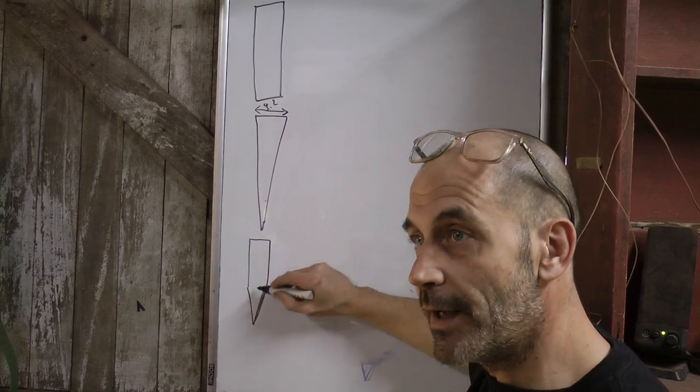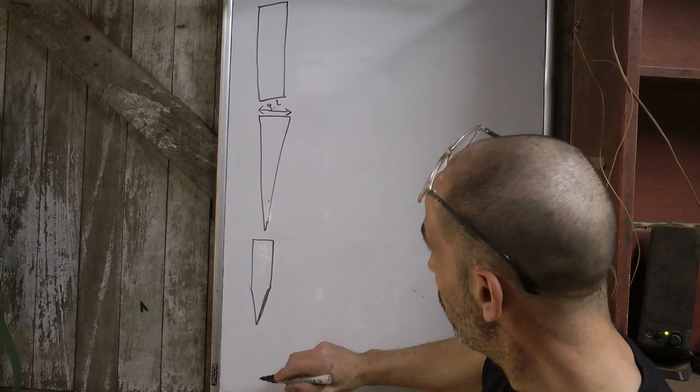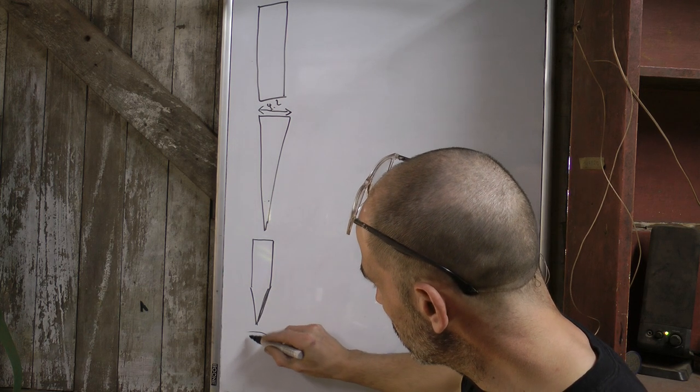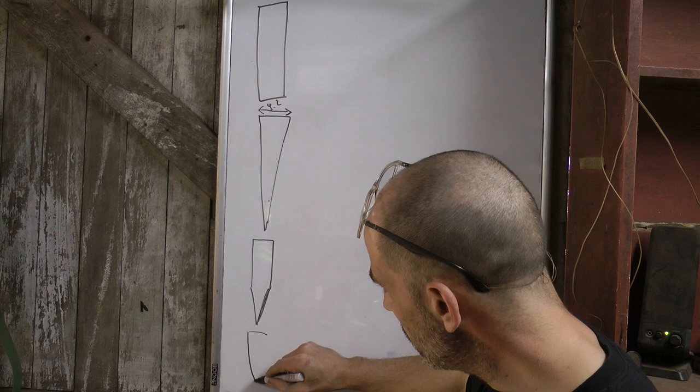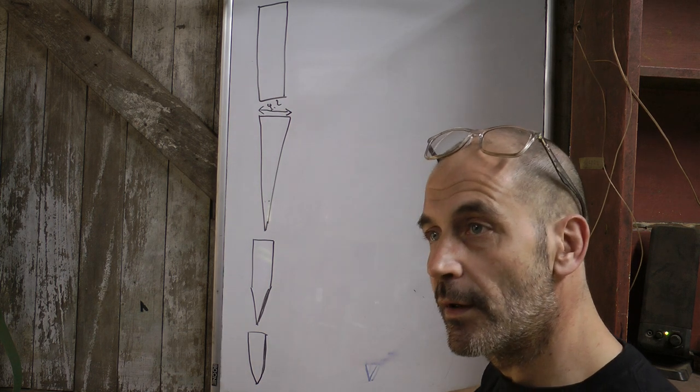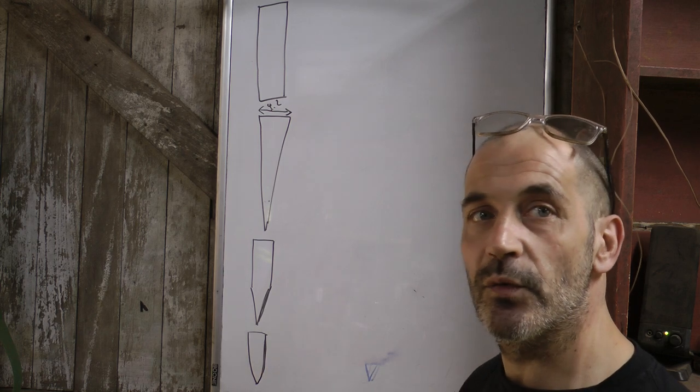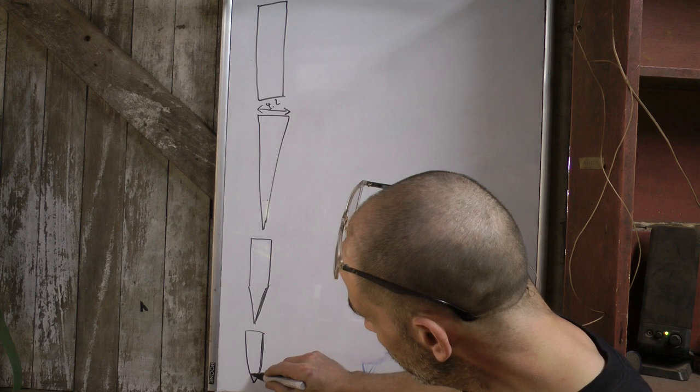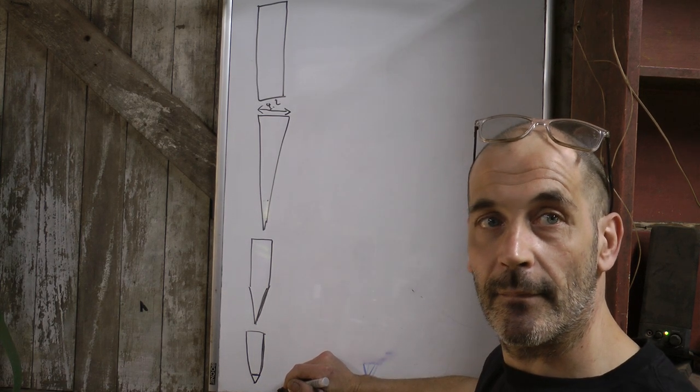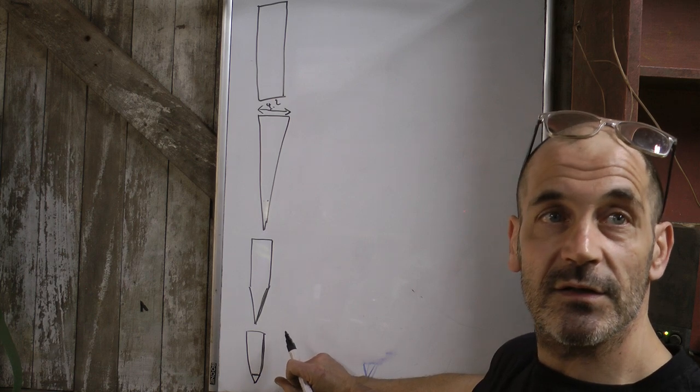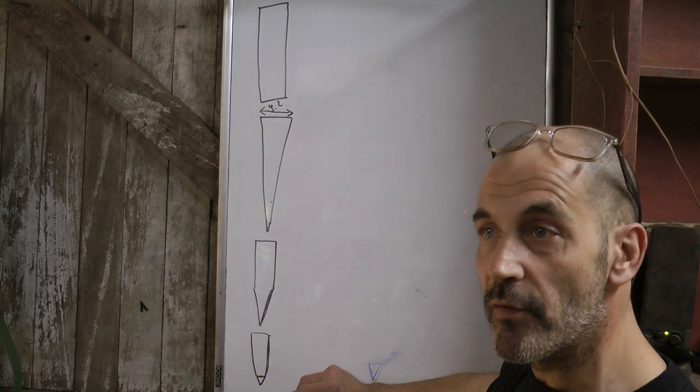Then there's another type of grind, that's a convex grind, which is a bit more like this. It's almost like a bullet shape, which is good for knives that will be used quite heavily, because you still have quite a fair bit of meat down there. All heavy duty machetes and swords would have that sort of profile.